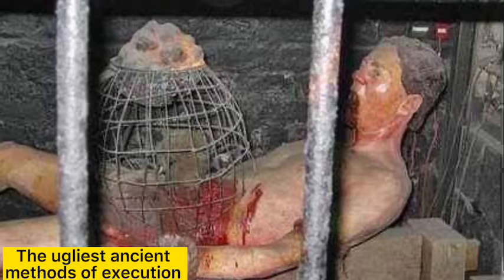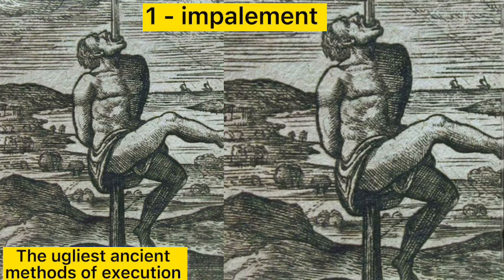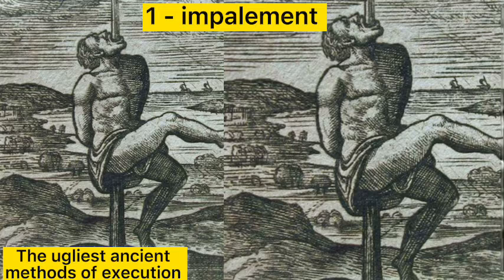Method 1: Impalement. This method of execution spread in the Middle Ages, where the criminal is forced to sit on a wooden stake. The criminal then slips slowly because of his weight, until the stake penetrates his body and comes out of his head — a process that sometimes takes more than three days. This method was widespread in 15th-century Romania during the rule of Vlad Dracula, who killed 80,000 people in the same way and enjoyed watching them die.